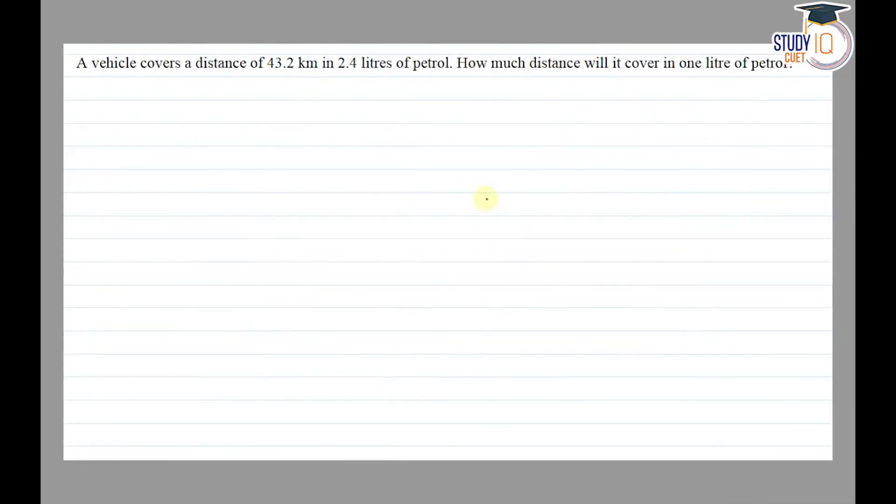Hello everyone, this question appears in Class 7th NCERT chapter of Fractions and Decimals. This is the sixth question of exercise 2.7. The question says that a vehicle covers a distance of 43.2 kilometers in 2.4 liters of petrol.